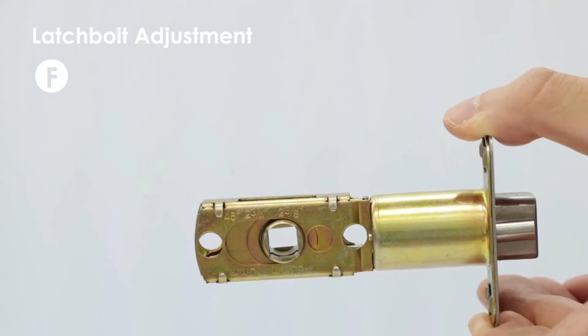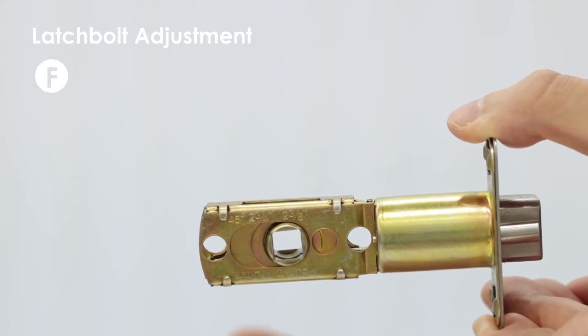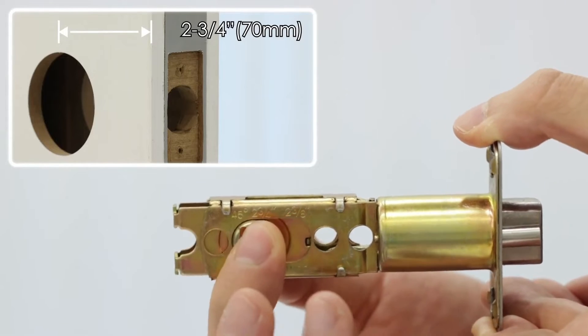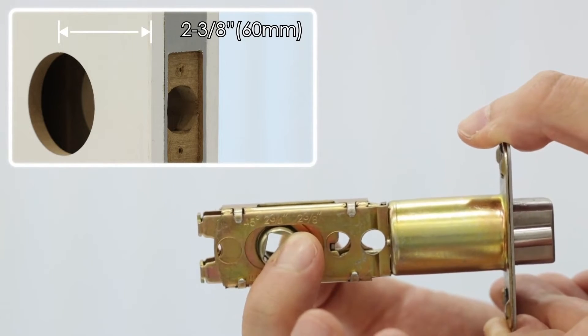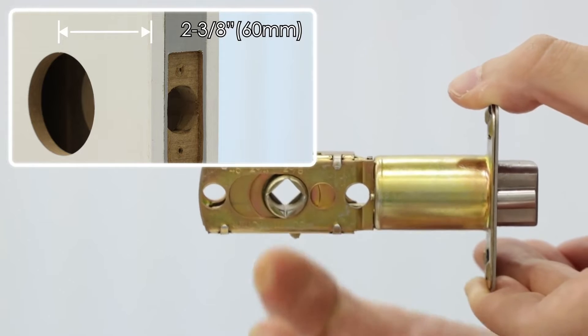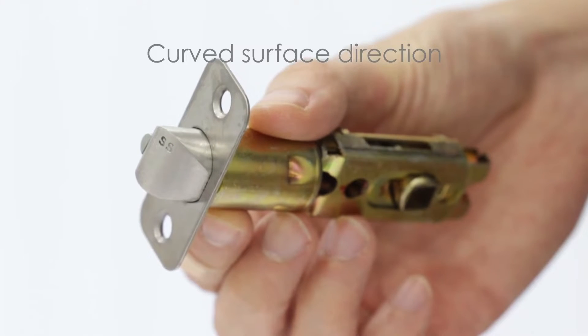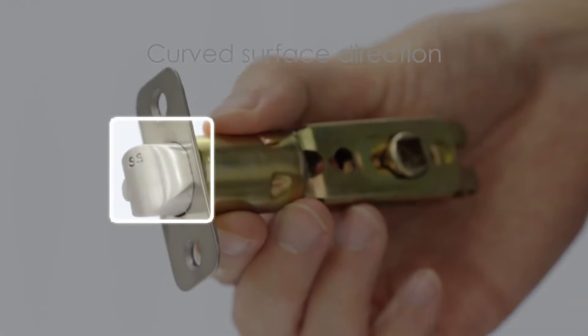Adjust latch bolt F. Push the shaft to adjust the lock set to 2 and 3/8 or 2 and 3/4. After adjusting the latch bolt F, determine the orientation of the latch bolt.